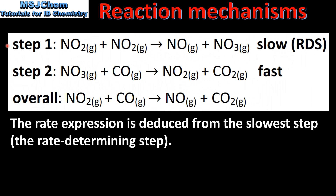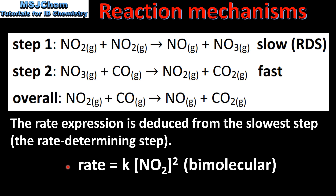Let's look at another reaction. In this reaction mechanism step 1 is the slowest step, therefore it's the rate determining step. Here we have the rate expression. Because there are two reactant particles in the rate determining step, the reaction is bimolecular.